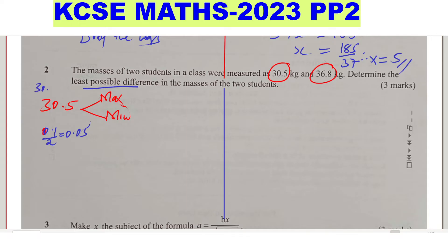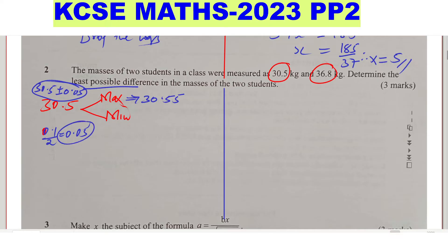So to get the limits under which 30.5 lies, we take 30.5 plus or minus 0.05. To get the maximum of 30.5, we add 0.05, which gives 30.55. To get the minimum of 30.5, we subtract 0.05, which gives 30.45. That is for 30.5.